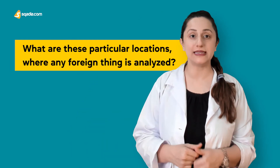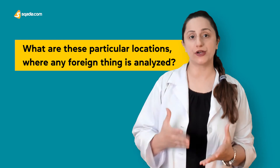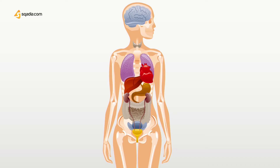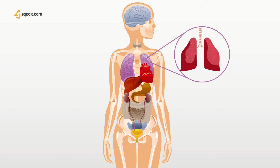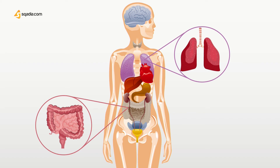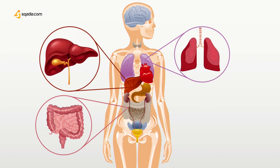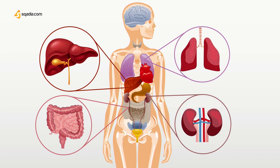We already discussed how metabolism occurs at proper check-in points. The question arises: what are these particular locations where any foreign thing is analyzed? These include the lungs, where any drug entering nasally is screened; the gastrointestinal tract, where oral drugs are mostly screened before traveling to the liver; the liver, the main boss; and the epithelial cells of the kidney, where it gets screened one last time. Since these organs play a vital role in the pharmacokinetics of the drug, any diseases affecting these organs will disrupt the pharmacokinetics as well.